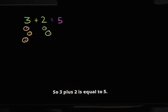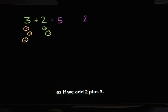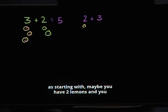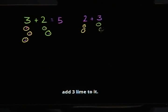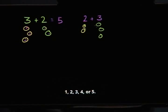So 3 plus 2 is equal to 5. And we also saw that that's the exact same thing as if we add 2 plus 3. That makes sense because this is the same thing as starting with maybe you have 2 lemons and you add 3 limes to it. You're still going to end up with 5 pieces of fruit: 1, 2, 3, 4, 5.